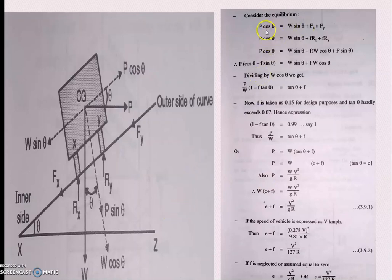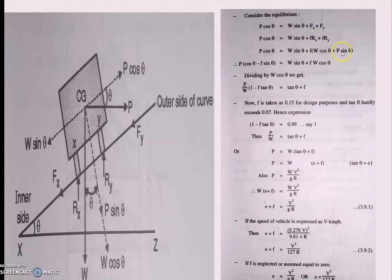Considering equilibrium and taking the summation of all horizontal and vertical forces: P cos θ = W sin θ + Fx + Fy. Substituting Fx = f·Rx and Fy = f·Ry, and since Rx = W cos θ and Ry = P sin θ, we get: P(cos θ − F sin θ) = W sin θ. Dividing both sides by W cos θ gives P/W = tan θ + F. This leads to the final expression: E + F = V²/GR. This equation (2.9.1) is the most important equation used to calculate the super elevation value of a vehicle. If speed is in km/h, equation 3.9.2 applies.